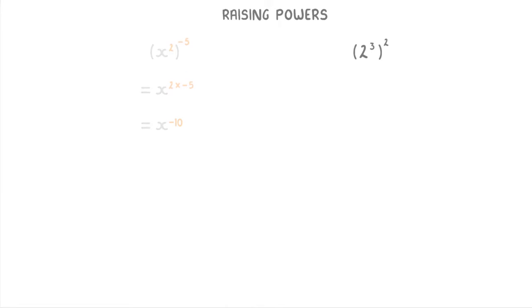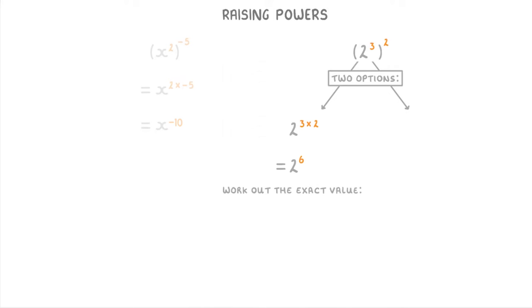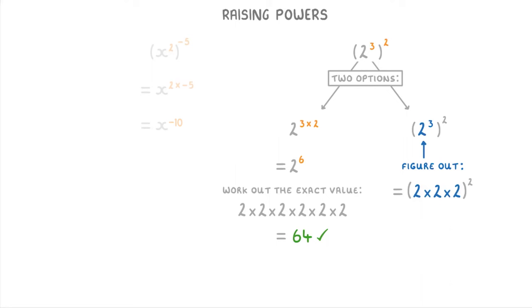If we have a number inside the bracket instead of a letter, we've got two options. One would be to do it in the same way as before: 2 to the power of 3 times 2, which is 2 to the power of 6. We can then work out the exact value by multiplying six 2s together, which would be 64. The other way would be to figure out what the 2 cubed bit inside the bracket is first — 2 times 2 times 2 is 8 — so really we have 8 squared, which is 8 times 8, giving us 64 again.